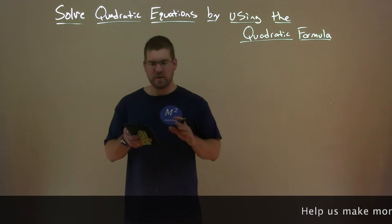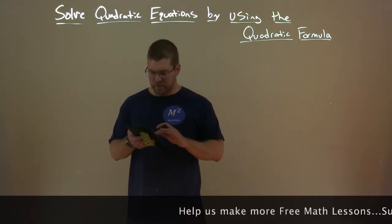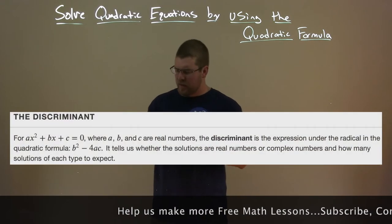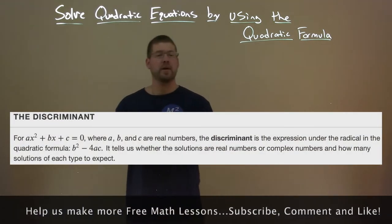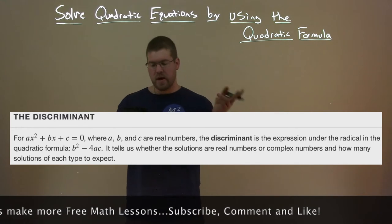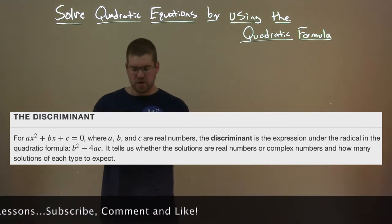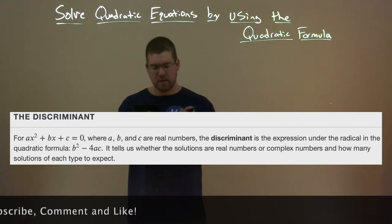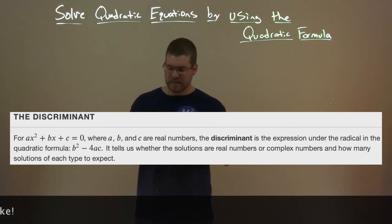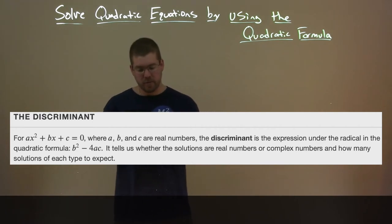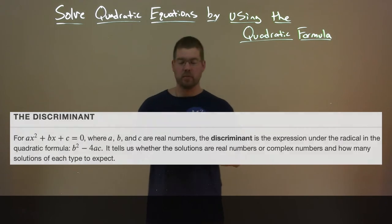Now we're going to talk about what is called the discriminant, and this is part of quadratic equations. The discriminant for ax squared plus bx plus c equals zero, where a, b, and c are real numbers, is the expression under the radical in the quadratic formula: b squared minus 4ac. It tells us whether the solutions are real numbers or complex, and how many solutions of each type there will be.